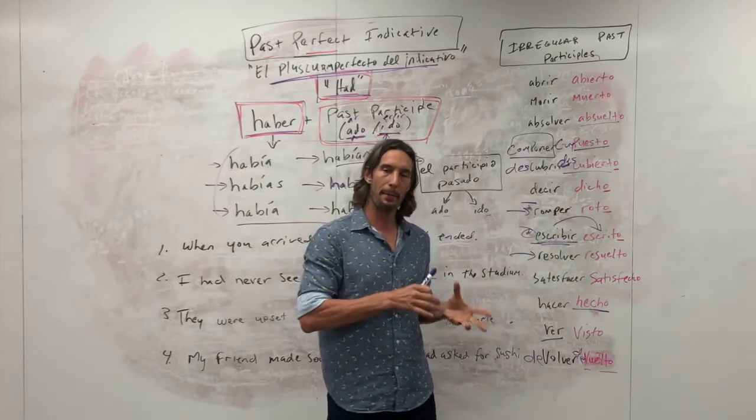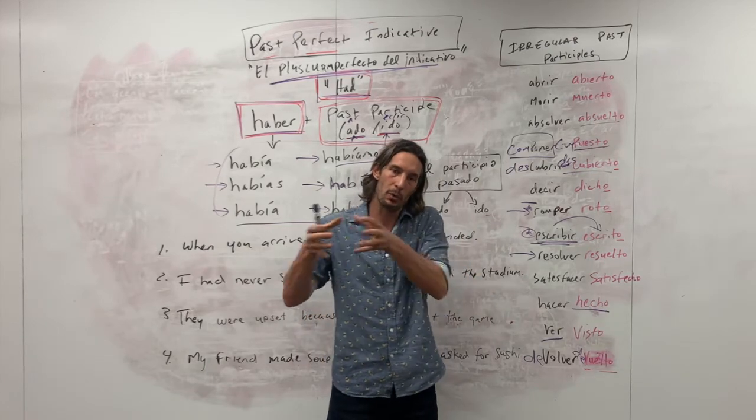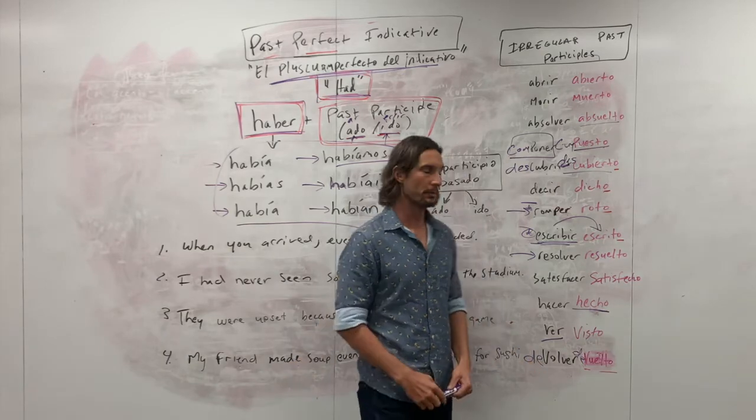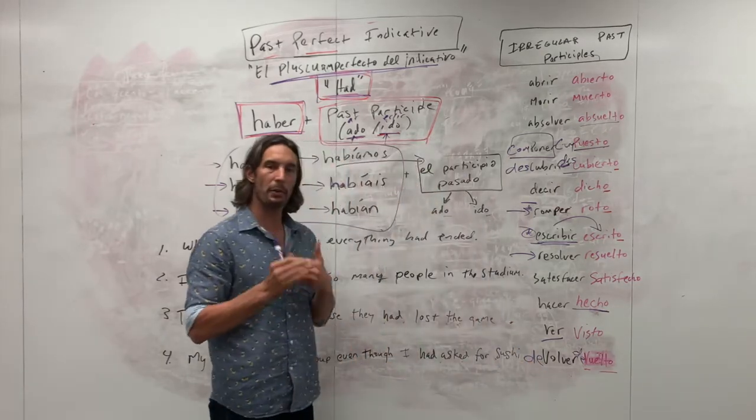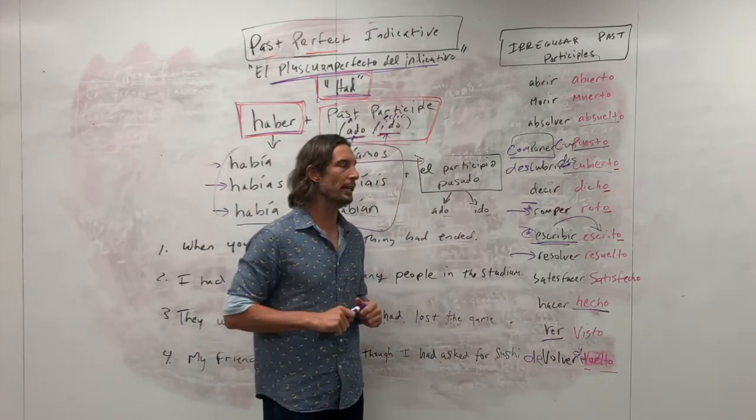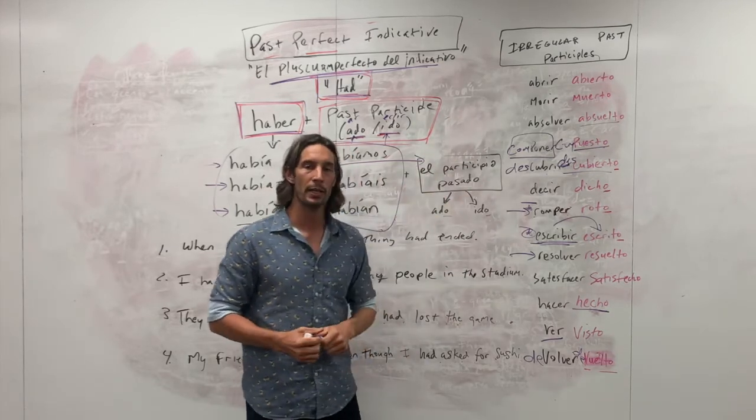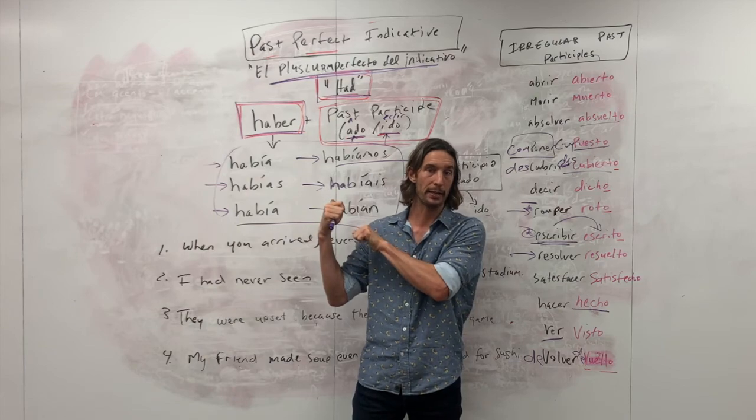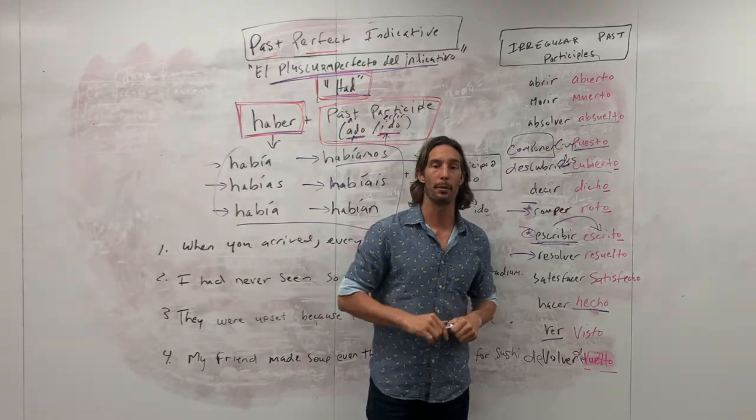Right? And so, again, that prefix comes right along with it, because it, in effect, is its own verb. So, anyways, hopefully that was helpful. And like I said, just to reiterate, what you see here as irregulars are not only irregulars here for the past perfect indicative, but they're irregulars for all the perfect tenses.